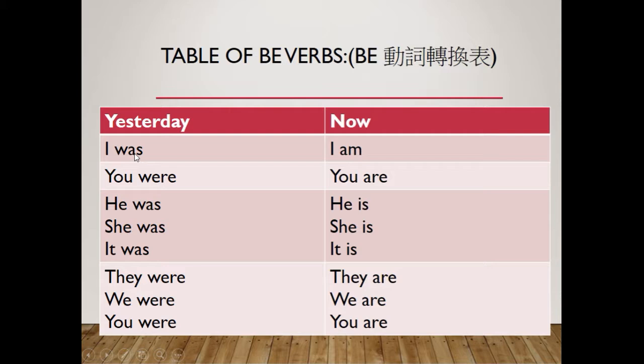Practice with the be verbs in the past tense: I was, you were, he was, she was, it was, they were, we were, you were — to get familiar with which be verb goes with which subject. 'I' goes with 'was' in the past tense, 'you' goes with 'were' in the past tense, and so on and so forth.